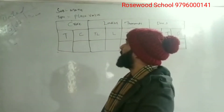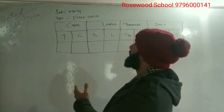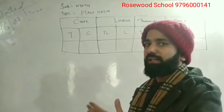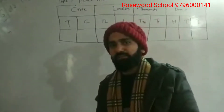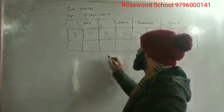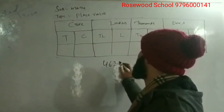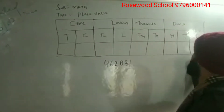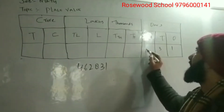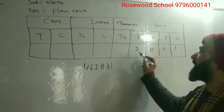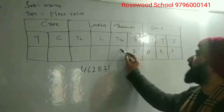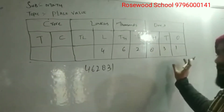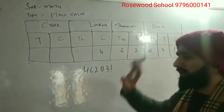Let's begin with the place value. I am going to talk about the Indian place value chart. In the Indian place value chart, I have the number 4,62,831. We write 1 in the ones place, 3 in the tens place, 8 in the hundreds place, 2 in the thousands place, 6 in the ten-thousands place, and 4 in the lakhs place. So it starts with the ones place and ends with the lakhs place.